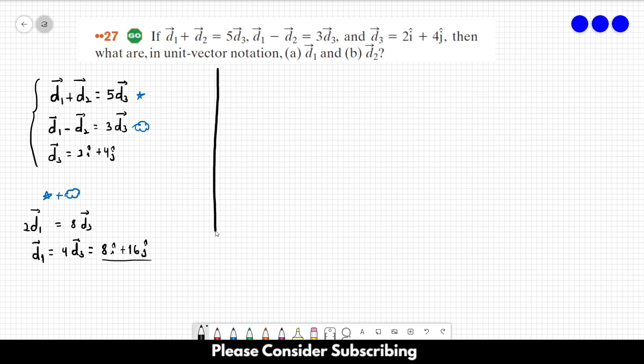For letter b, since we now know vector d1, we can choose any one of those equations. I'm going to choose the star equation over here, and I'm going to send d1 to the other side. So d2 is equal to 5d3 minus d1.